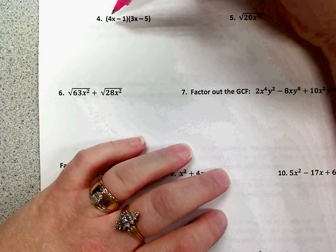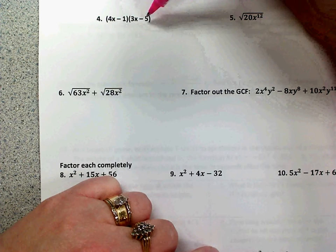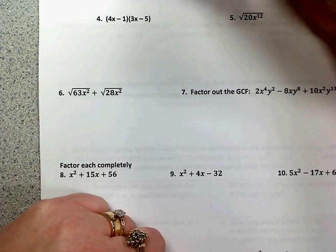On number 4, you have a binomial times a binomial. So you have two terms times two terms. Two times two is four, so you should get four terms when you do this multiplication.